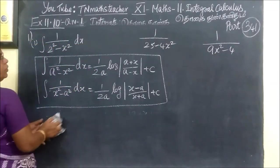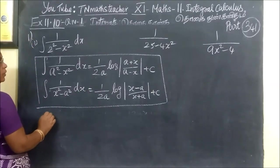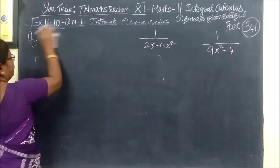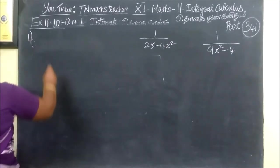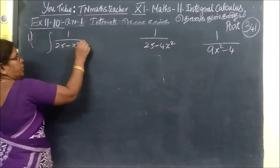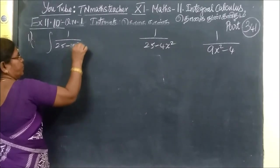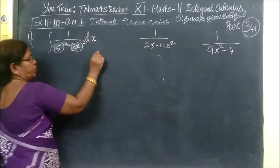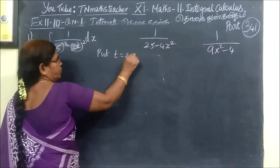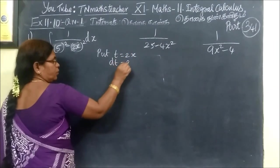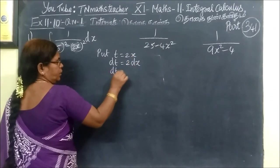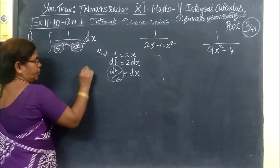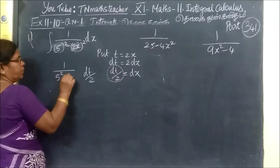Coming to the next question: 25 minus x squared. So 25 minus x squared equals 5 squared minus x squared. The interval is 1 by 25 minus x squared. Here 25 minus x squared, we can write as 5 squared minus x squared. We use a substitution: let t equal to 2x, so dt equals 2 dx, then 1 by 5 squared minus t squared.